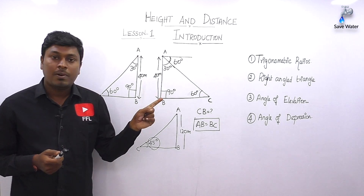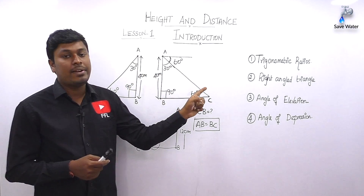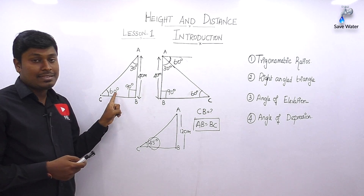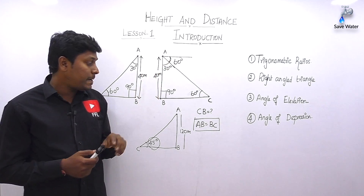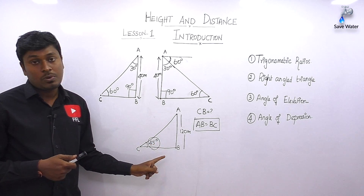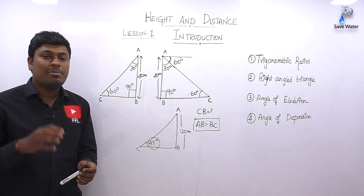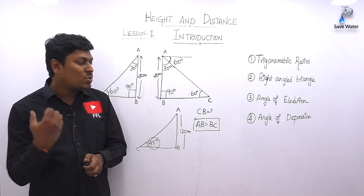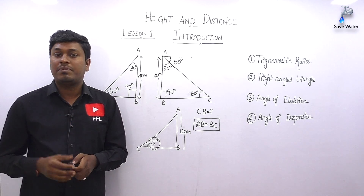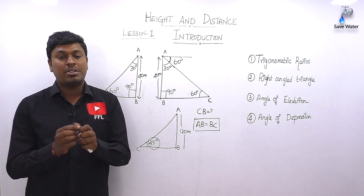To summarize: learn the tabular column for trigonometrical ratios, know the basics of the right angle triangle, and understand angle of elevation — line of sight increases, angle inside triangle — and angle of depression — line of sight decreases, angle outside triangle. Sum of angles = 180°, one angle = 90°, and if elevation is 45°, opposite equals base. In lesson two we'll solve basic questions, lesson three covers two-angle problems, and lesson four covers the toughest questions.